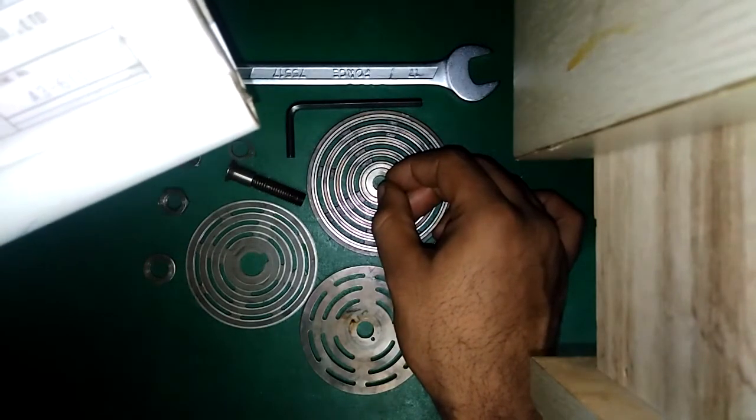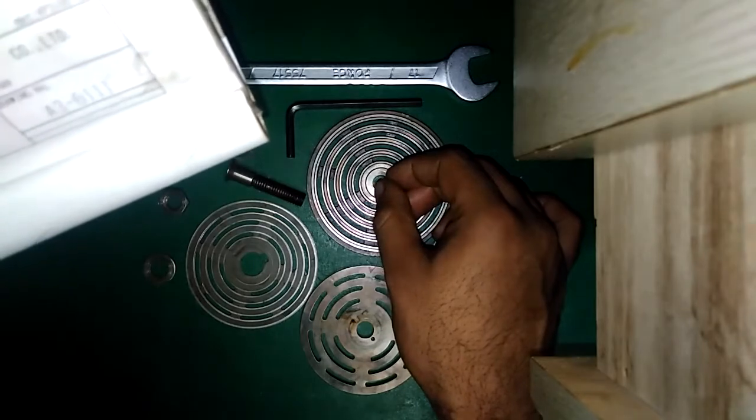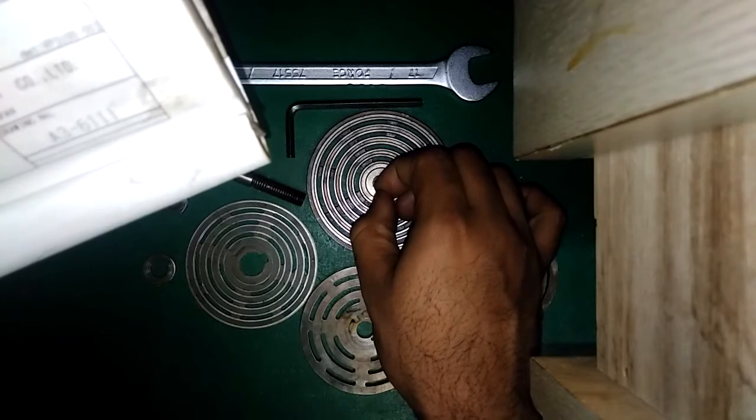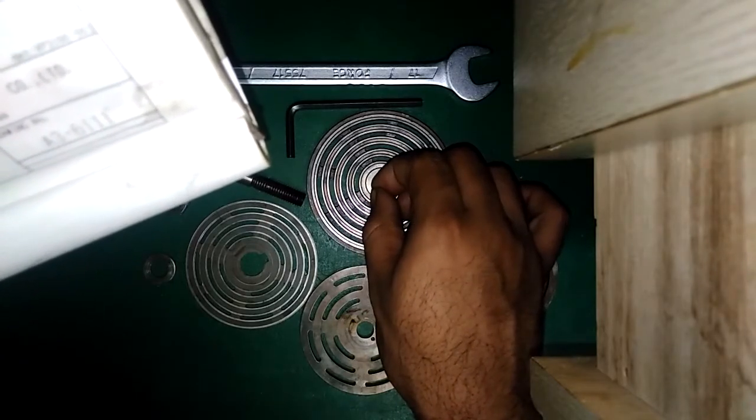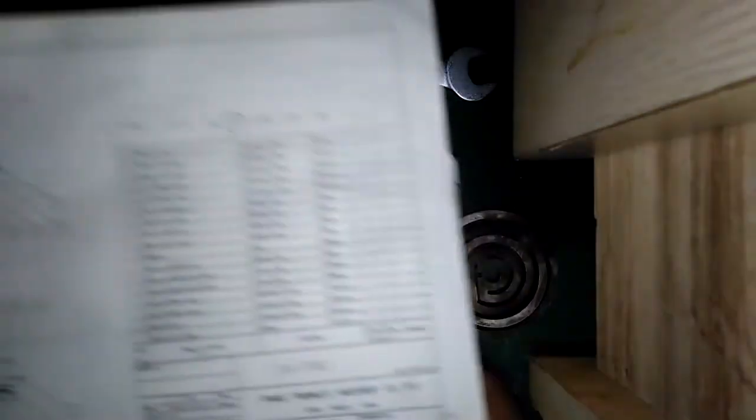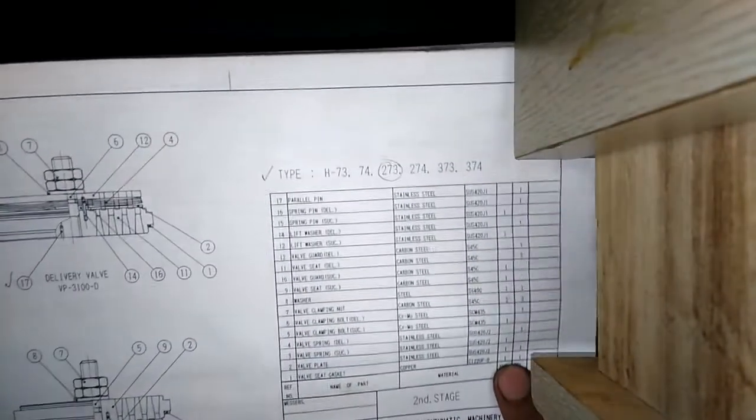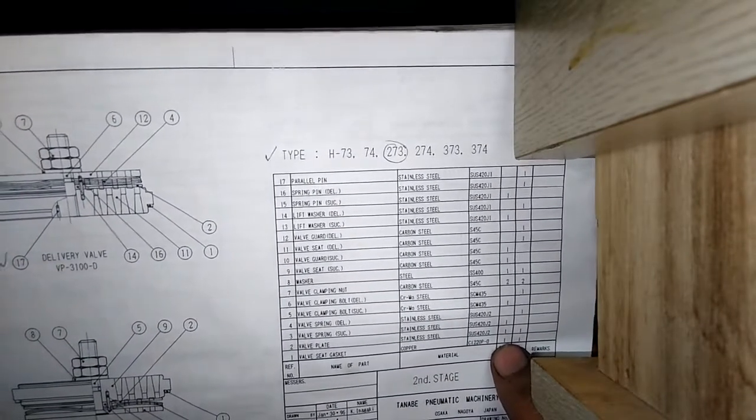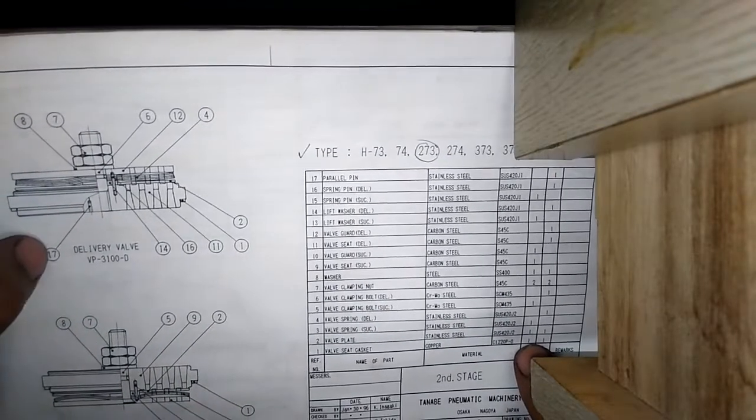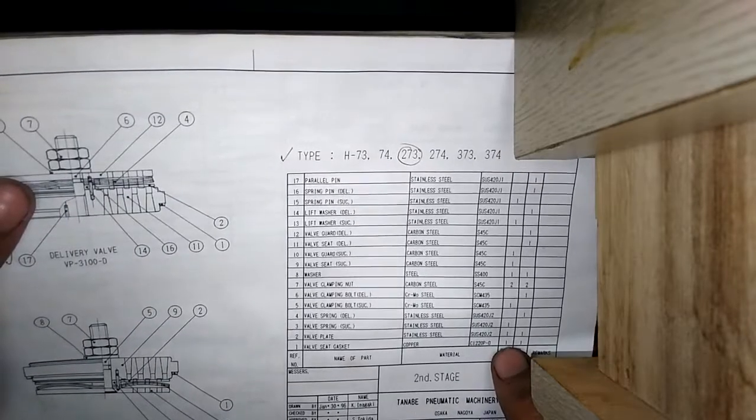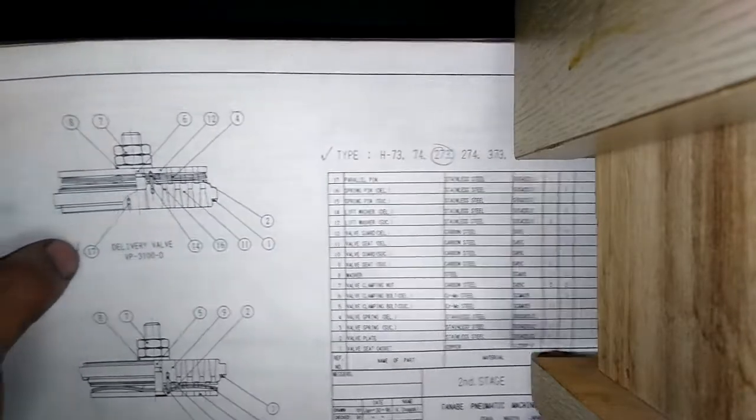This is the spring pin. It is number 16. This is a spring pin, also called a parallel pin. Number 17, the parallel pin is only in the delivery valve. I will show you in the next video.